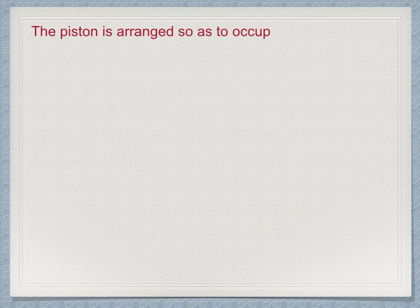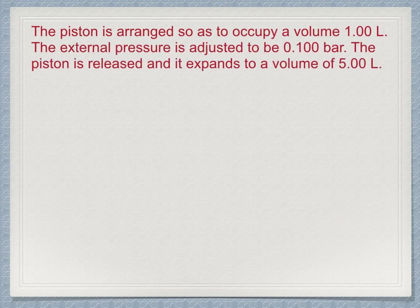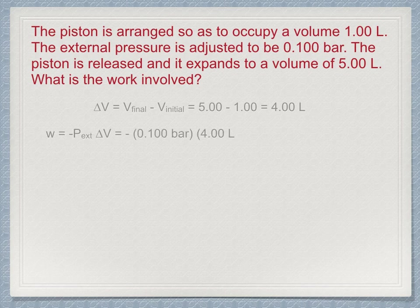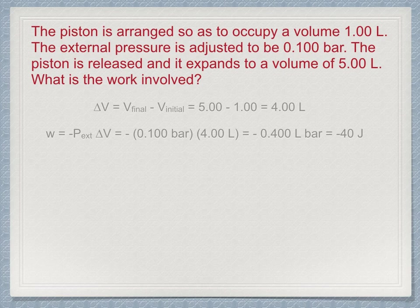Here's another couple of problems for you to consider. The piston is arranged so as to occupy a volume 1 liter. The external pressure is adjusted to be 0.1 bar. The piston is released and it expands to a volume of 5 liters. So we stop it at 5 liters by engaging the appropriate latch on the cylinder. What is the work involved? Well, delta V is 5 minus 1 or 4 liters. Work is minus P external delta V, minus 0.1 bar times 4 liters, minus 0.4 liter bar or minus 40 joules. Because the work is negative, the system has used up 40 joules of its internal energy in order to perform 40 joules of work on the surroundings. It has pushed back the 0.1 bar of external pressure so the system can occupy an additional 4 liters. It has increased its volume, but at the expense of its internal energy.